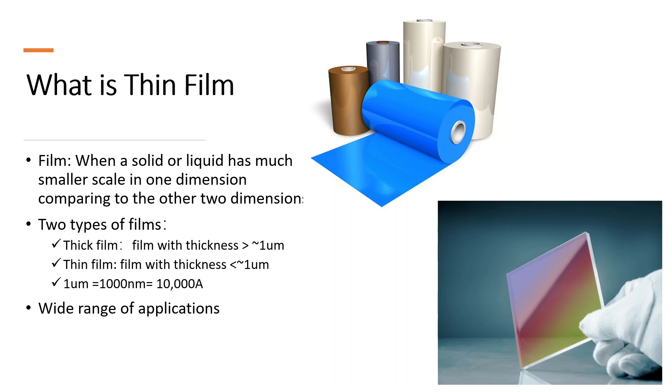So basically if the film have a thickness higher than one micrometer, that's why we call the thicker film. If that's below one micrometer, that's the thin film.